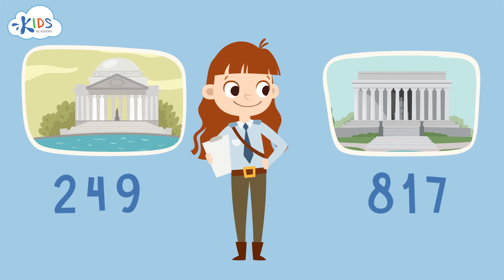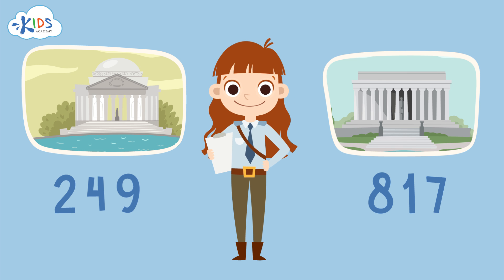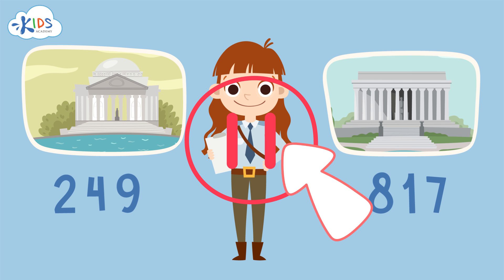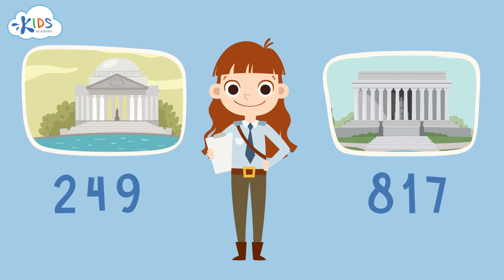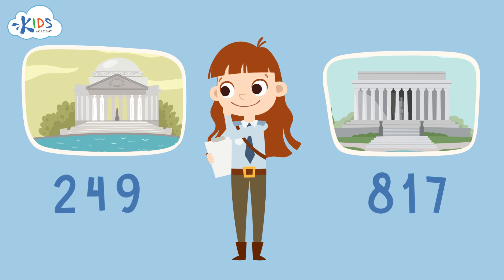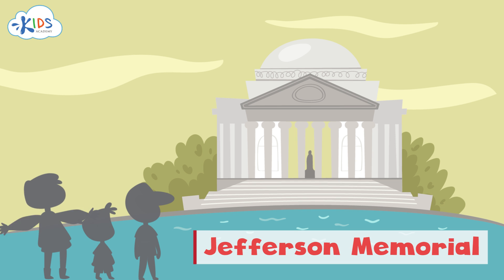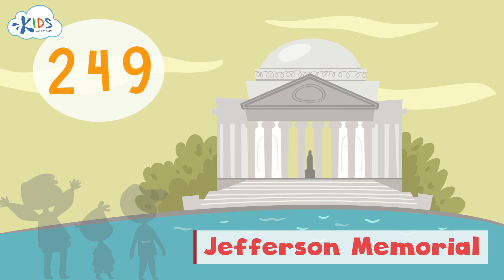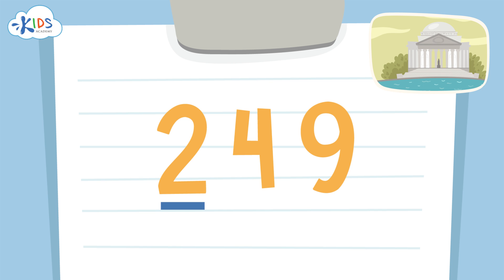I'll leave you with a challenge. I want you to help the ranger round the next two landmarks' visitors to the nearest hundred. I'll give you some time to think, but if you need more time you can pause the video and answer when you're ready. Okay, here's the answer. The Jefferson Memorial saw 249 visitors, so we're rounding 249 to the nearest hundred.